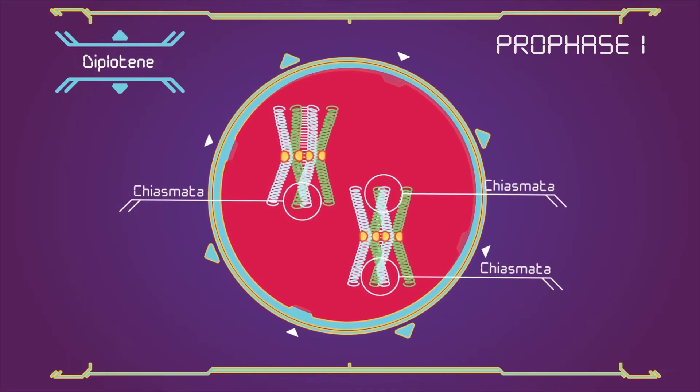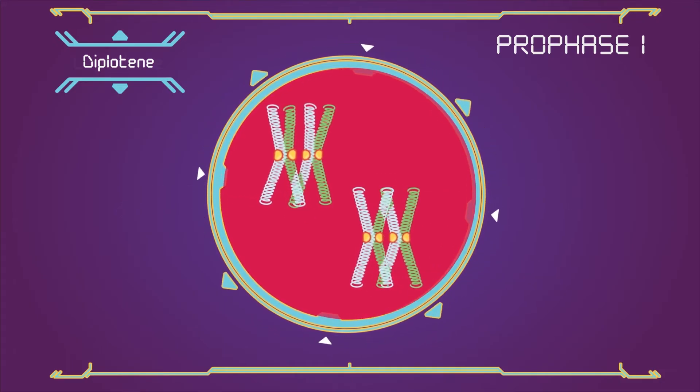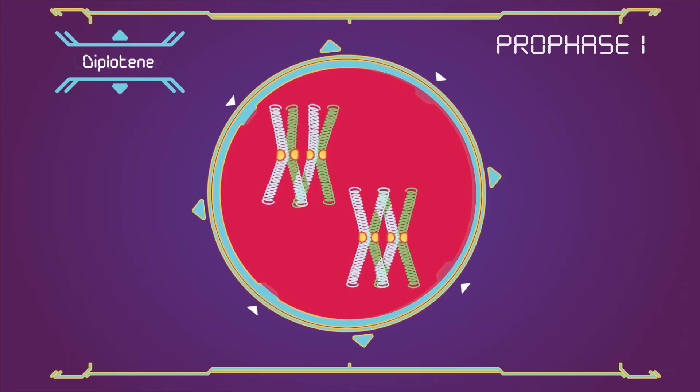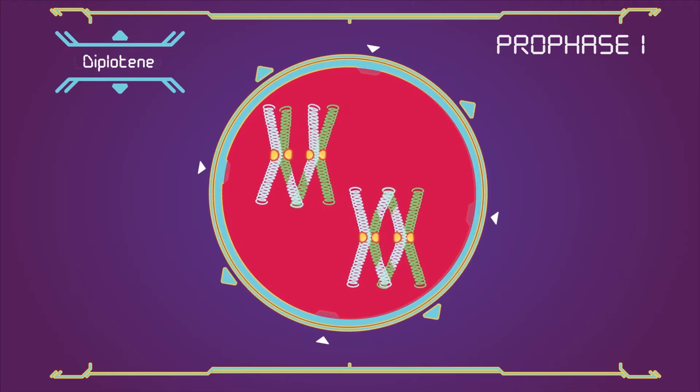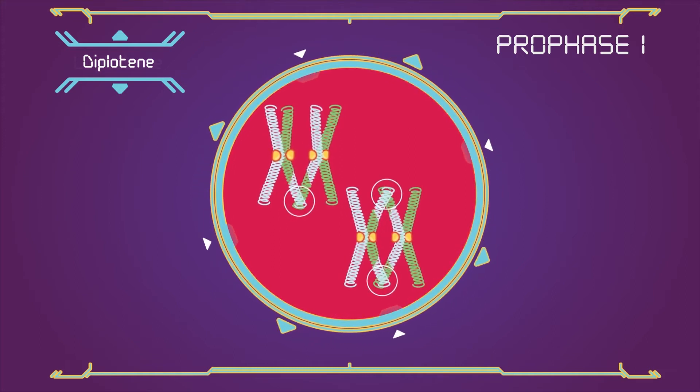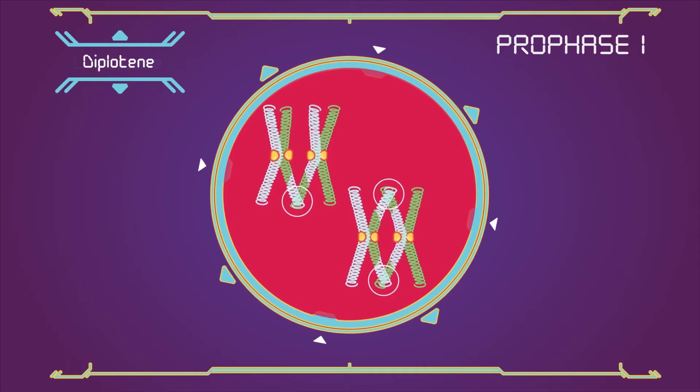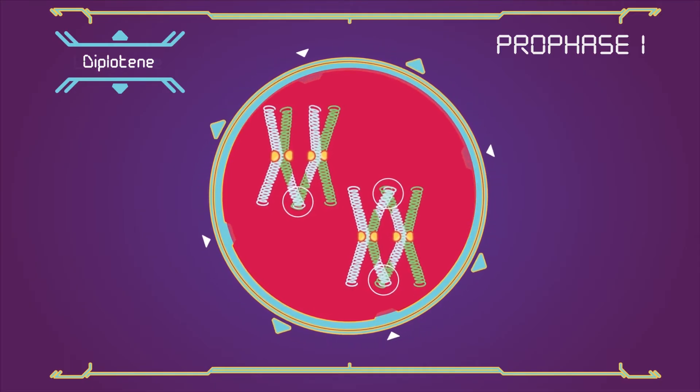Diplotene. The synaptonemal complex degrades and homologous chromosomes separate from one another a little. However, the homologous chromosomes of each bivalent remain tightly bound at chiasmata, the regions where crossing over occurred. The chiasmata remain on the chromosomes until they are at the transition to anaphase 1.